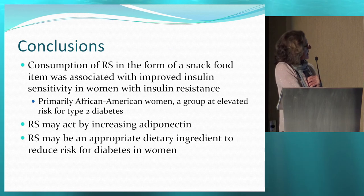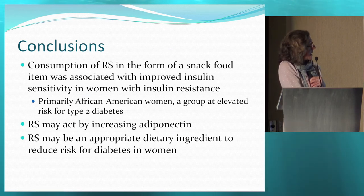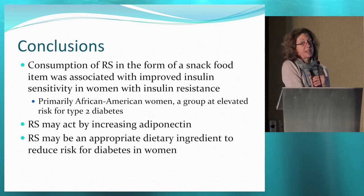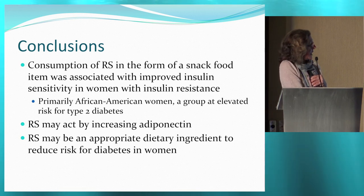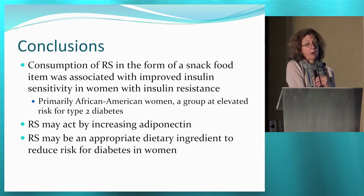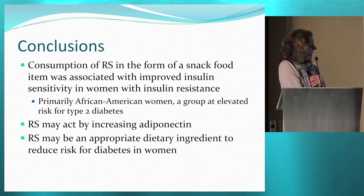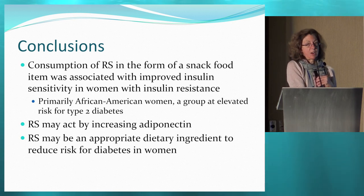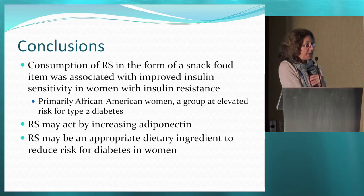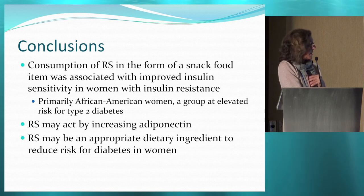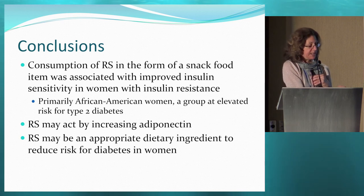In conclusion, consumption of resistant starch in the form of a snack food item was associated with improved insulin sensitivity in women who were insulin-resistant at baseline. In our hands, this was primarily our African-American women — a group at increased risk for type 2 diabetes. We don't know if resistant starch is acting through adiponectin; it's a provocative possibility requiring further testing. Importantly, resistant starch may be an appropriate dietary ingredient to reduce diabetes risk in insulin-resistant women.